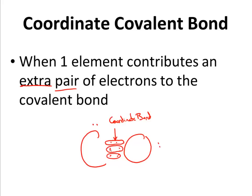Prior to this, this one came from carbon and so to this one, and this one came from oxygen and so to that one. But both of these come from oxygen alone, therefore this becomes known as my coordinate covalent bond.